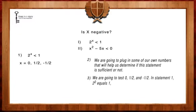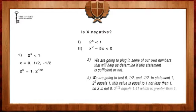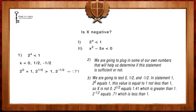In statement 1, 2 to 0 equals 1, and this value is equal to 1, not less than 1, so X is not 0. 2 to the half equals 1.41, which is greater than 1, and 2 to the negative 1 half equals 0.71, which is less than 1.